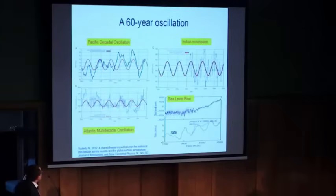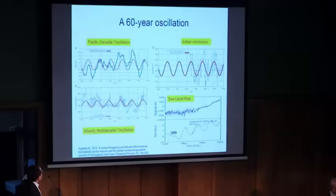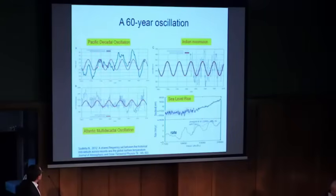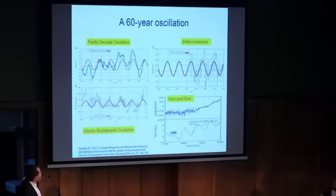Indeed, the 60-year oscillation is seen in several datasets, several centuries long. These are data for the Indian monsoon where we see a very nice 60-year oscillation. This is from a reconstruction of the Pacific Decadal Oscillation. This is a reconstruction of the Atlantic Decadal Oscillation — 60-year oscillation. This is a sea level rise where it is also possible to see a 60-year oscillation.